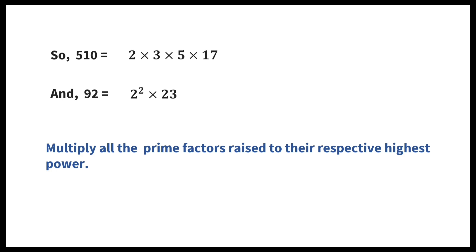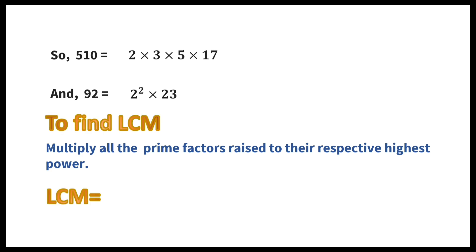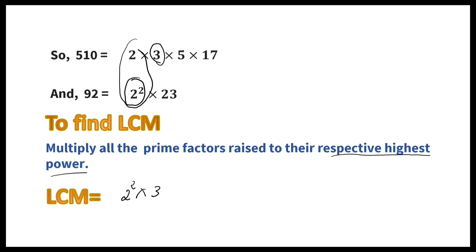To find LCM, multiply all the prime factors raised to their respective highest power. So among the prime factors, the highest power of 2 is 2 squared. We write 2 squared into 3 into 5 into 17 into 23, which equals 23,460.